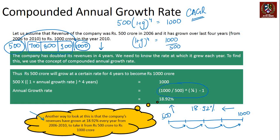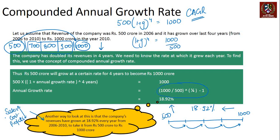CAGR is important because it gives us growth figures of the company's performance and tells us how the company has performed over these years in terms of growth numbers. Higher growth numbers are considered great. It is useful to calculate CAGR for sales, costs, and profits to understand what the company has done over its tenure for financial statement analysis.